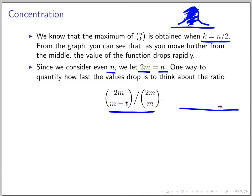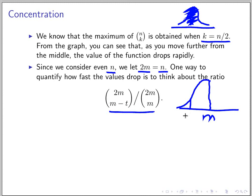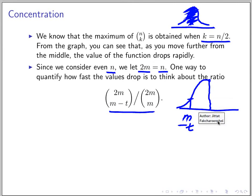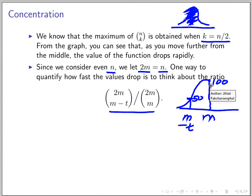What is exactly this ratio? We know that the maximum is at M. If we move further to M minus T, we want to see how small this is compared to that. We want to ask: how far do we have to go from M — from the middle — until the value drops by a half? So if this is 100, this is 50. That's like a half-life, but not exactly that.